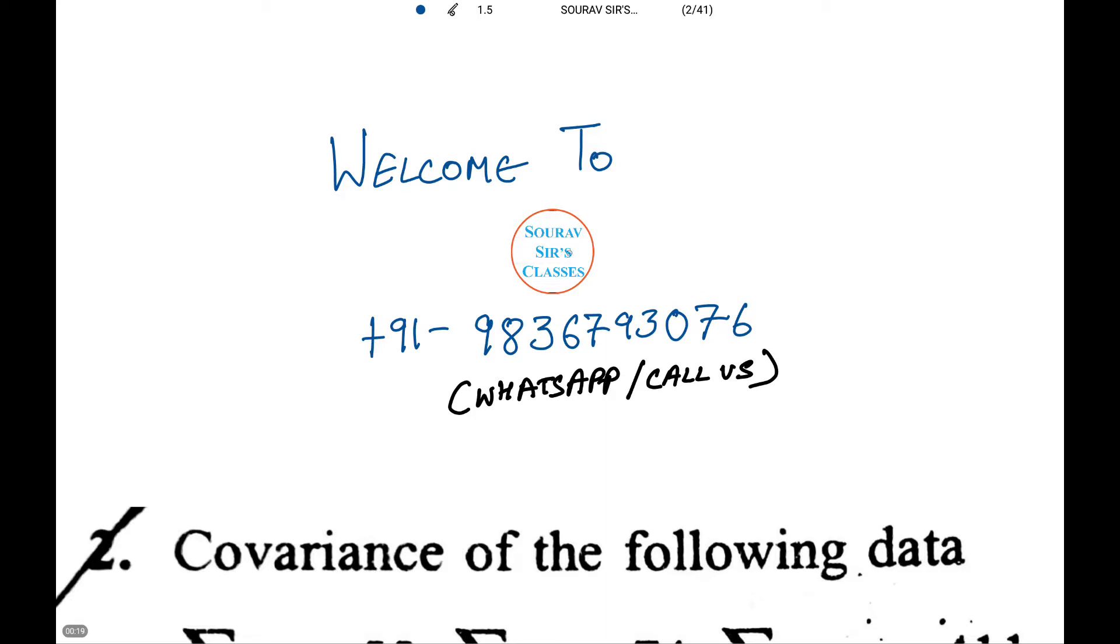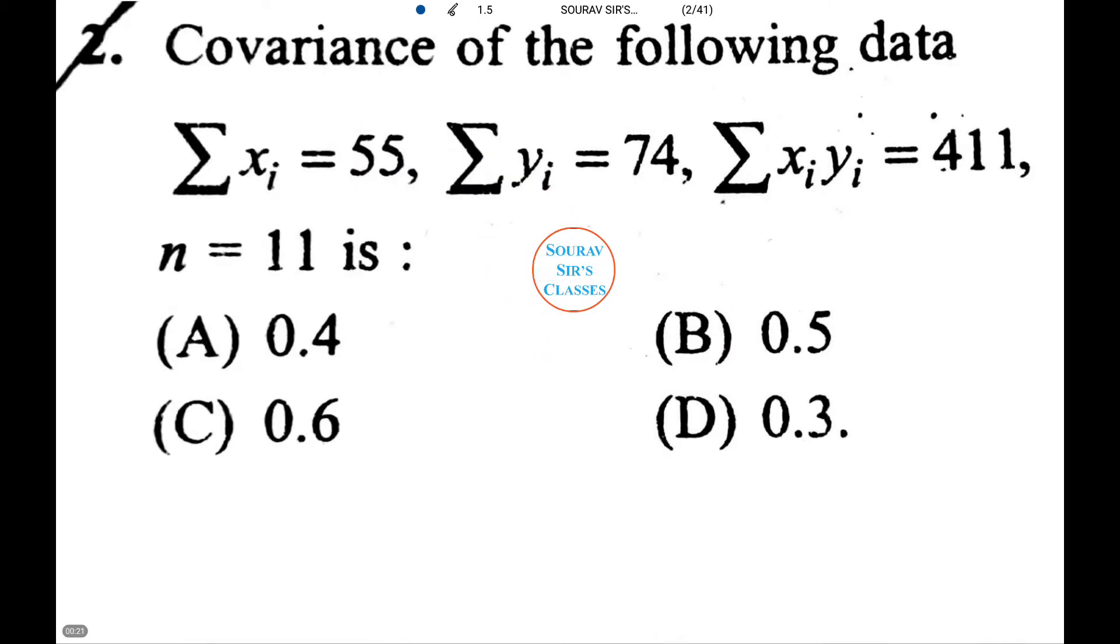Let's see our first question. Starting off with a very easy question, covariance of the following data are given. Rather they need to be found out. Sigma Xi equals 55, Sigma Yi equals 74, Sigma XiYi equals 411, and N equals 11.